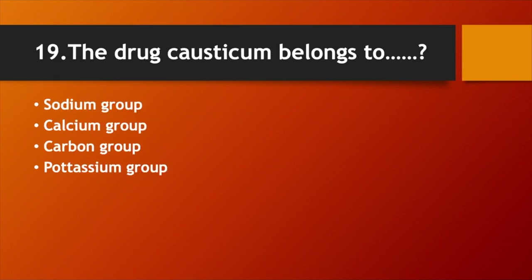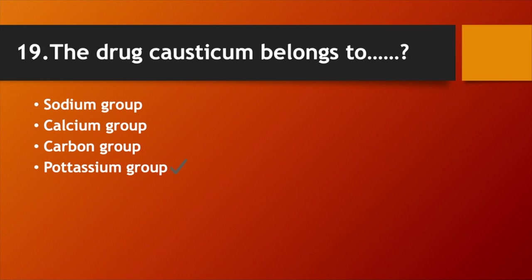The drug Causticum belongs to: Option A. Sodium group. Option B. Calcium group. Option C. Carbon group. Option D. Potassium group. Answer: Option D. Potassium group.